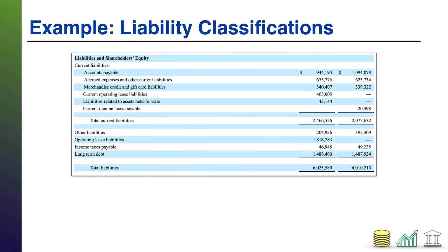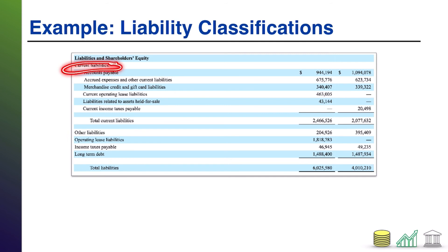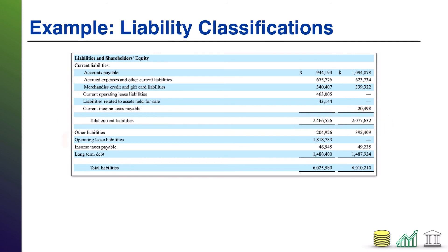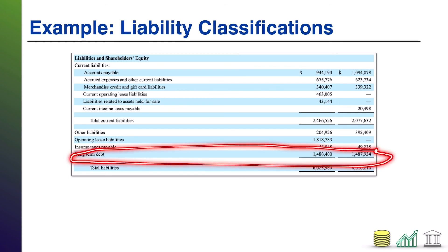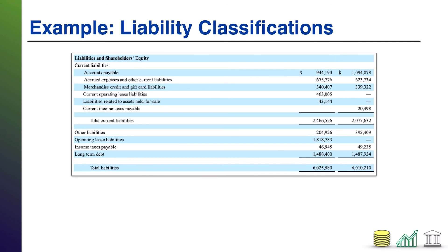Here's an example from Bed Bath & Beyond — the liabilities and shareholders' equity section, specifically just the liability section. First and foremost, there are their current liabilities, which are broken out and subtotaled. Then they have some miscellaneous other liabilities, and their long-term liabilities are all rolled up into a single line item. Total liabilities are then subtotaled. This gives you a picture of how the real world sometimes differs from textbook learning. In a textbook, you put current liabilities in a certain order, subtotal, put long-term liabilities in a certain order, subtotal. But Bed Bath & Beyond chose to consolidate long-term into a single line item. You can guarantee that if you go to the notes to the financial statements, it will be broken out in significant detail. This is the liberty that companies have with the presentation of their financials.